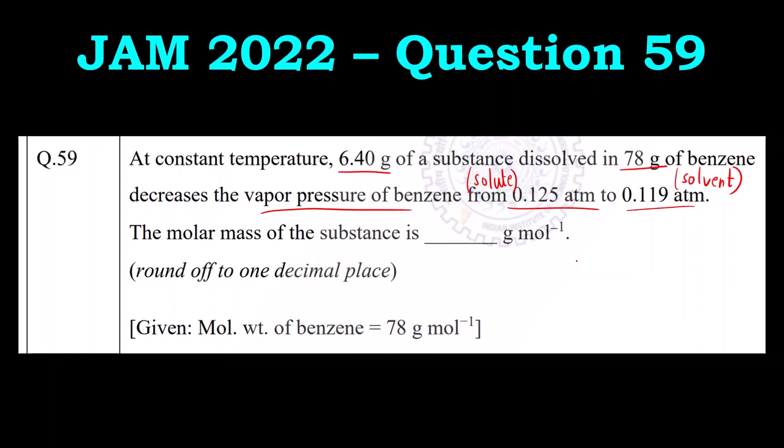The molar mass of the substance is how much? We have to round off to one decimal place. Let us write down the given data. Mass of solute W2, always remember 2 is for solute, 1 is for solvent. Weight of solute is 6.40 grams. Mass of solvent W1 is 78 grams.